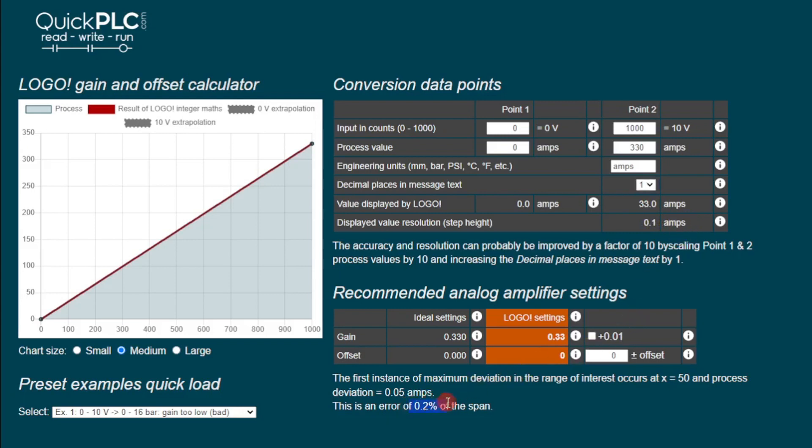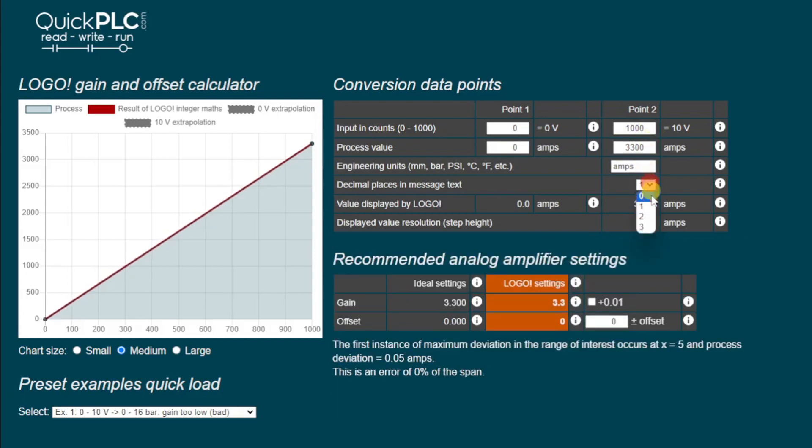And now we've got 33.0 amps with the displayed value step of 0.01 amps and a maximum error of 0.2%. The tip is telling us that we can go and improve it again. So we'll go 3300 and increase to two decimal places. And now our conversion error is 0.01 amps. And we've got very close results down at the bottom here. These are the settings you will apply in the logo.